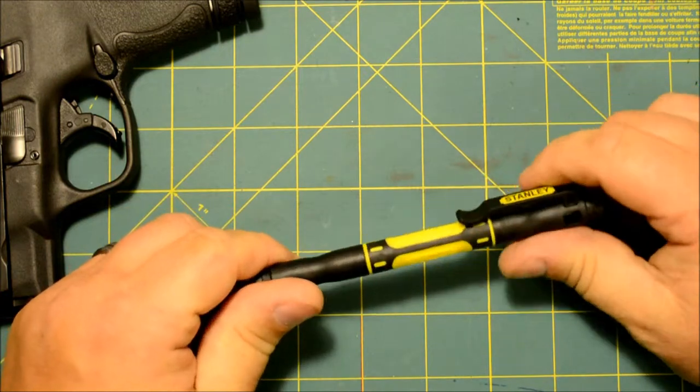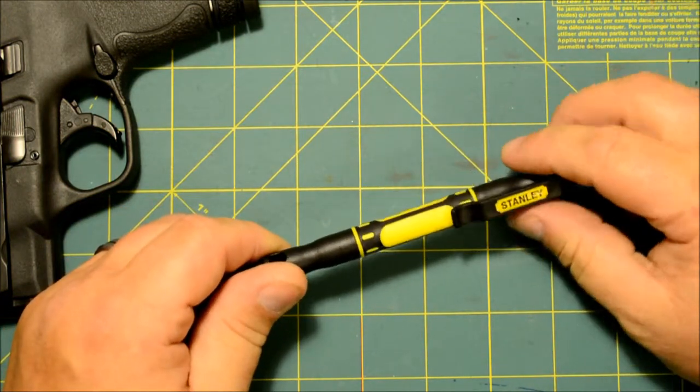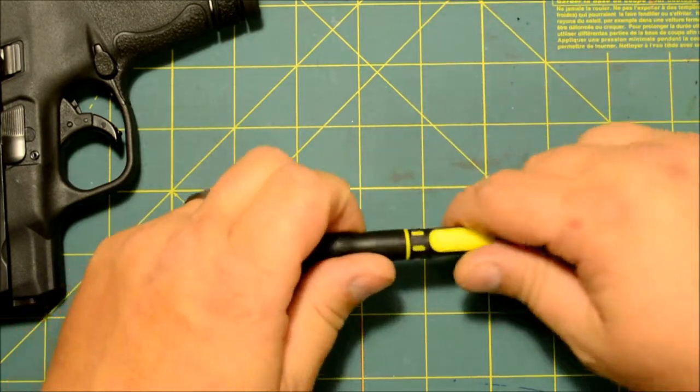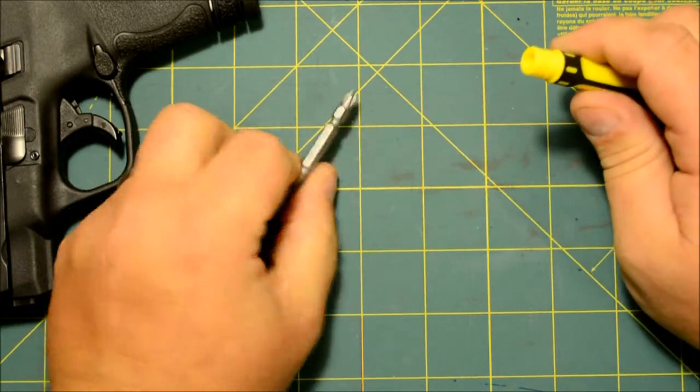It's got a pocket clip and a nice little embossed Stanley logo if you're into that sort of thing. But the main part is the screwdriver section—it's got two bits in it.